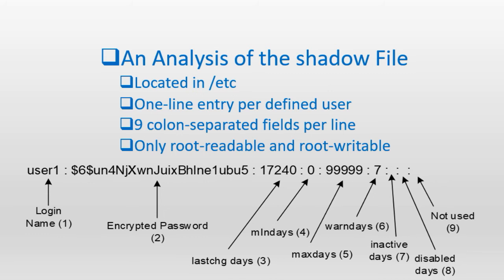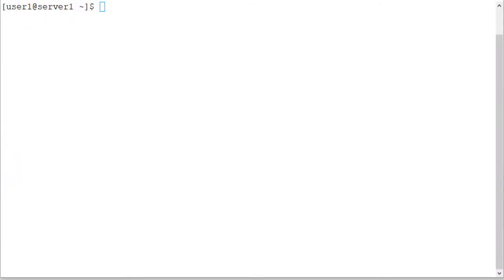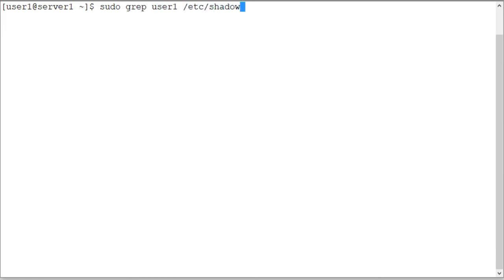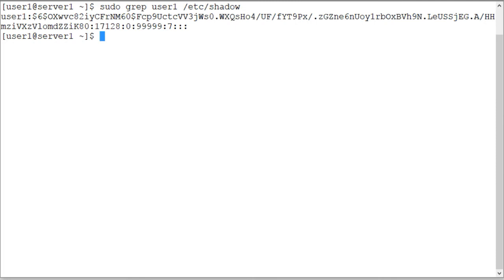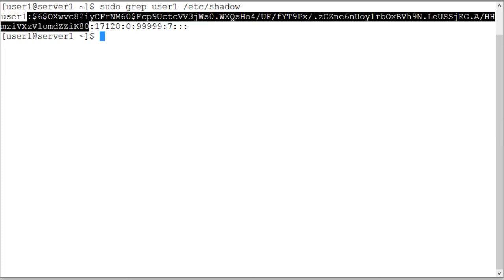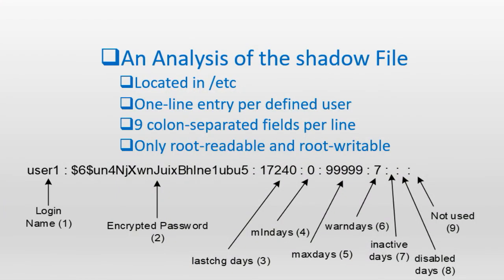Field number one holds the login name or username as it appears in the passwd file. Field number two stores the encrypted password. A single exclamation point prepended to the encrypted password implies that the user account is locked and the user cannot log in. A double exclamation point and nothing else means a password was never created for this user. A completely empty field allows the user to log in without entering a password. Let's look at user one in the shadow file: running 'sudo grep user1 /etc/shadow', we can see the entry — in the second field there is a long stream which is the encrypted password.